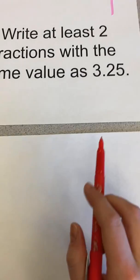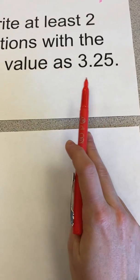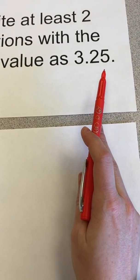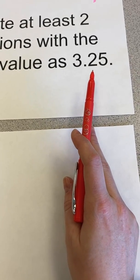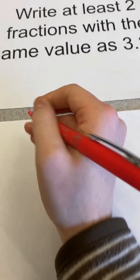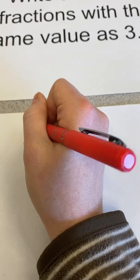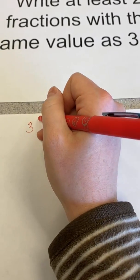First off, I think of this as money. So if I had $3.25, I could have three $1 bills and one quarter. And one quarter we know is the same as one-fourth of a dollar.